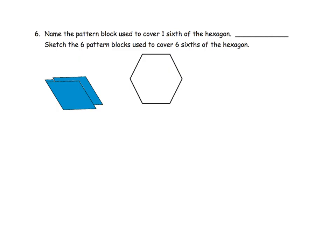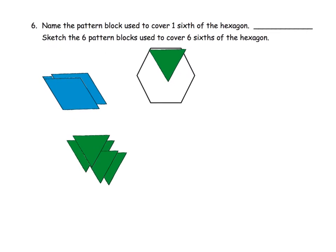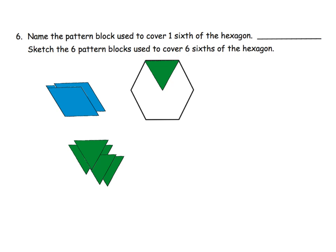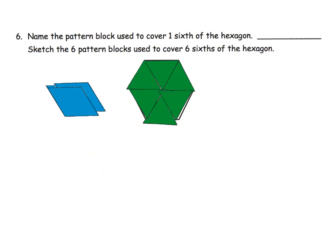So it says, name the pattern block to cover one sixth of the hexagon. Now we've already kind of done that. We said, alright, one triangle gives us a sixth of the hexagon. So we already know that part. So now the idea is, let's see, there we go. Alright, so now it says, but sketch the six pattern blocks used to cover six sixths of the hexagon. Well, okay, that means if we take six triangles, that's going to give us the whole hexagon. So one whole hexagon. Look at that. Right there. So that is what the picture would look like if we wanted to sketch what six pattern blocks covering that whole hexagon would look like.